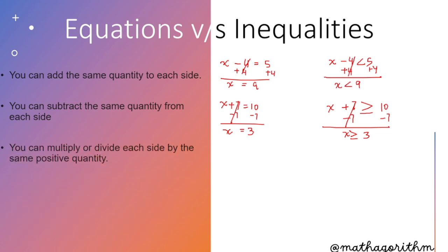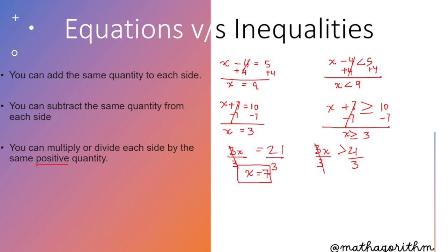You can multiply or divide each side by the same positive quantity. Remember, the word positive is very important here because there is a different rule when multiplying or dividing by a negative quantity. So if 3x equals 21, and similarly 3x is greater than 21, divide both sides by 3. In the equation, x equals 7. In the inequality, x is greater than 7.